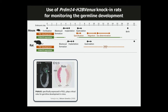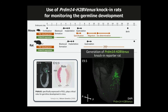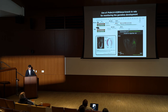We focused on PRDM14, which is specifically expressed in PGCs and pluripotent cells and is quite important for germline development in mice. We newly generated a PRDM14-HTV-Venus reporter rat, and as you can see, PRDM14-HTV-Venus nicely visualized the endogenous rat PGCs in embryos. Using this reporter, we analyzed germline development in rat.